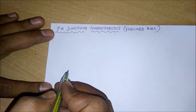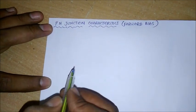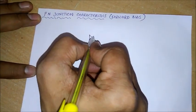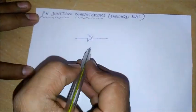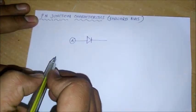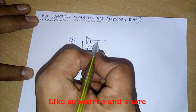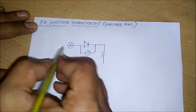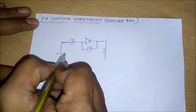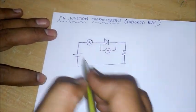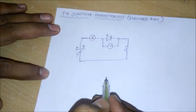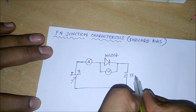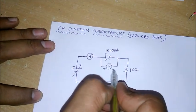Today we are going to see the PN junction forward bias characteristics. To observe them, we connect the diode in a small circuit with an ammeter in series and a voltmeter in parallel with the diode. A resistor is added in series to limit the current. The diode used is a 1N4007 and a 1 kilo ohm resistor. The complete circuit is connected to a variable voltage source.